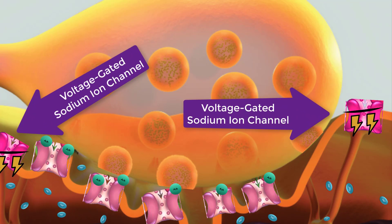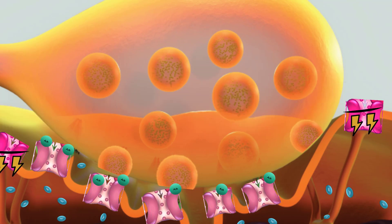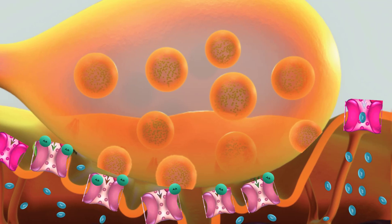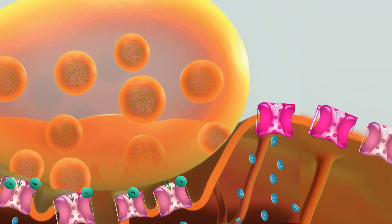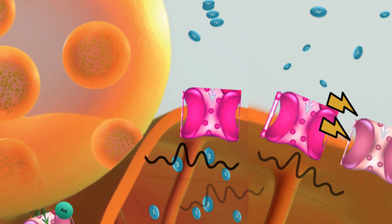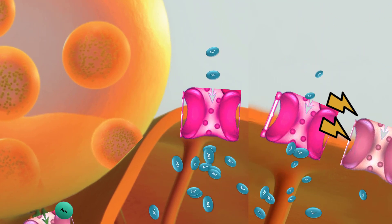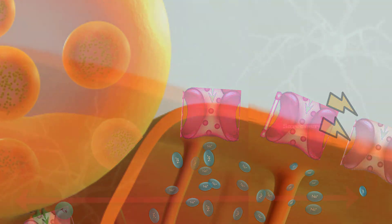When voltage-gated sodium channels open, there is a further influx of positively charged sodium ions entering the muscle fiber. This further depolarizes the muscle fiber, triggering even more voltage-gated sodium channels to open. This chain reaction is the action potential.